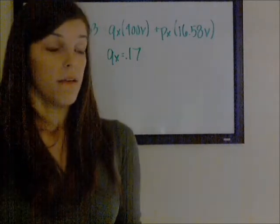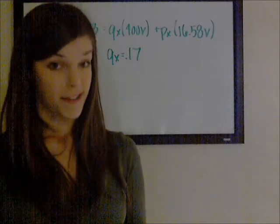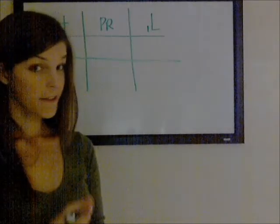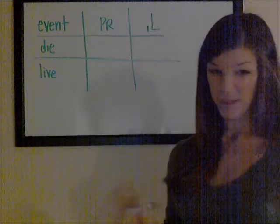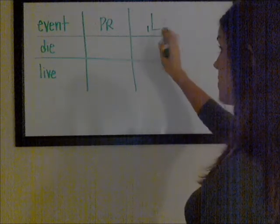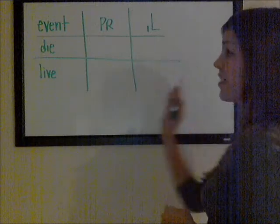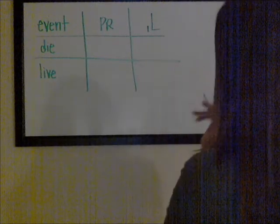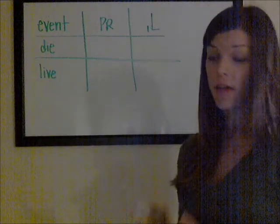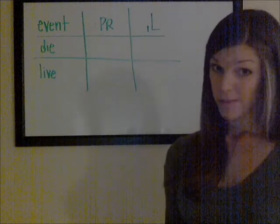The only other thing we need is the variance of the loss random variable at time 1. I'm partial to setting up a table of all the different possibilities and their associated probabilities to see what's going on. Since this is a two-year term insurance, there are only two possibilities for the loss random variable at time 1: either you die, with probability qx+1, and the loss is one thing, or you live, with probability px+1, and it's another.